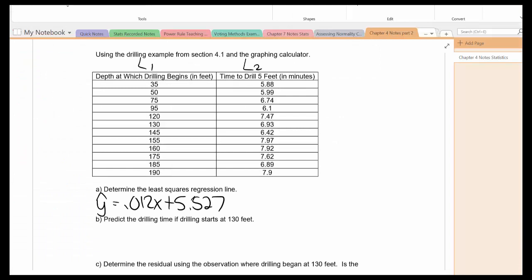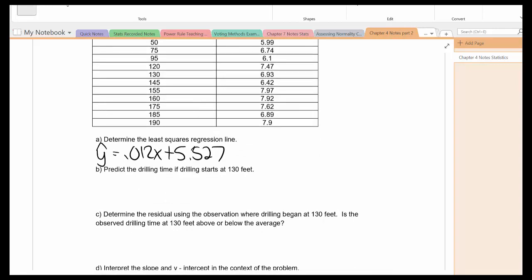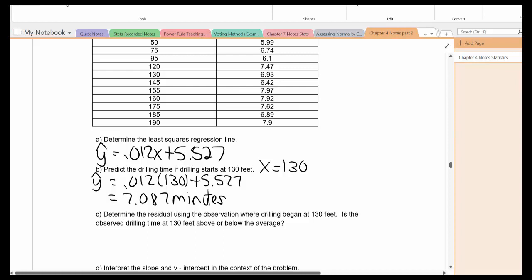So notice it's y hat, don't put y, just put y hat equal to 0.012x plus 5.527. Part b, predict the drilling time if the drilling starts at 130 feet. So x is equal to 130, so plug that in. So multiplying and adding, that'll give me this. Don't forget to put your unit of measurement, which in this case is going to be minutes.